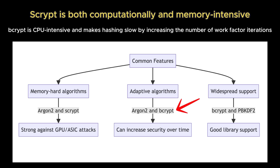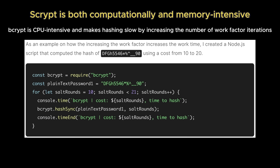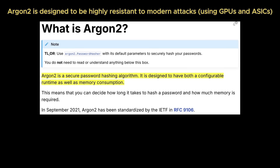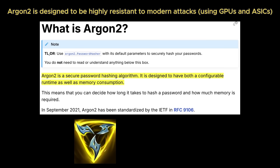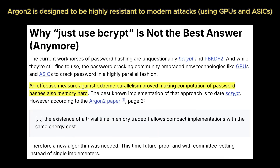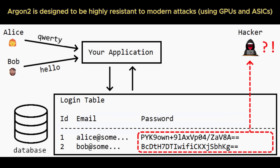Bcrypt is more vulnerable to specialized hardware like GPUs, which are designed for high-speed but low-memory operations. The most modern standard, Argon2, which was the winner of the Password Hashing Competition, is tunable across three dimensions: time cost, memory cost, and degree of parallelism, allowing developers to strike a balance between user experience and brute-force resistance. These algorithms are designed not just to hash passwords, but to make guessing them economically infeasible for attackers, even with very powerful hardware.